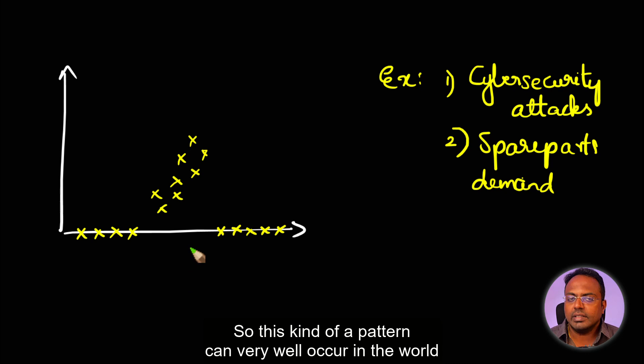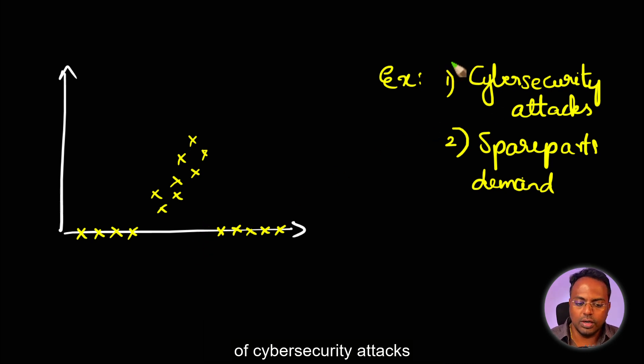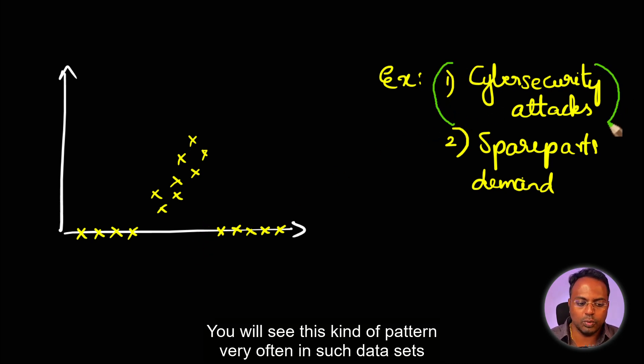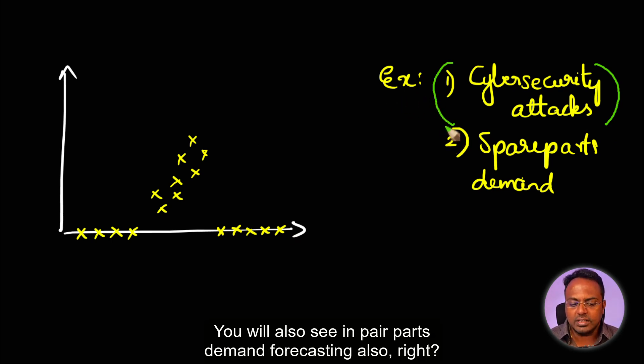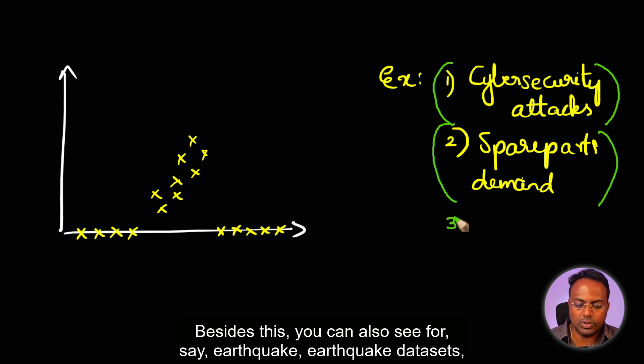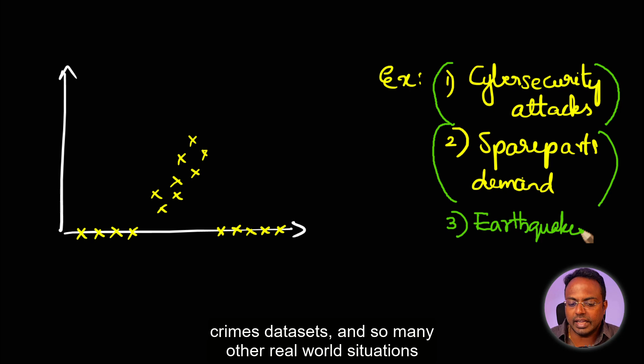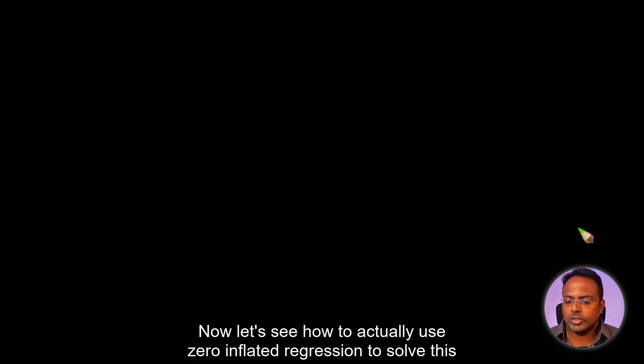This kind of pattern can very well occur in the world of cyber security attacks. You will see this kind of pattern very often in such datasets. You will also see it in spare parts demand forecasting. Besides this, you can also see it for earthquake datasets, crime datasets, and so many other real world situations. Now, let's see how to actually use zero inflated regression to solve this.